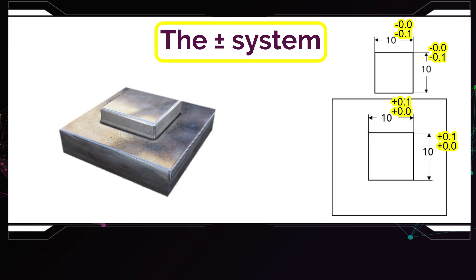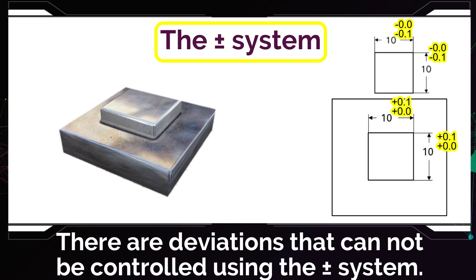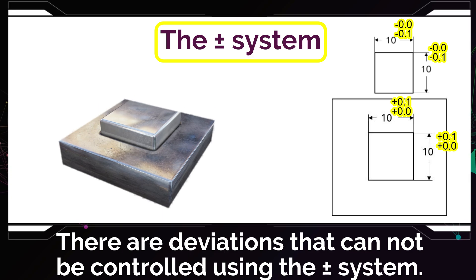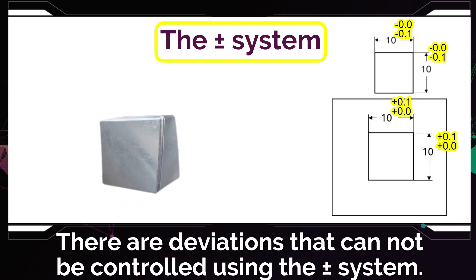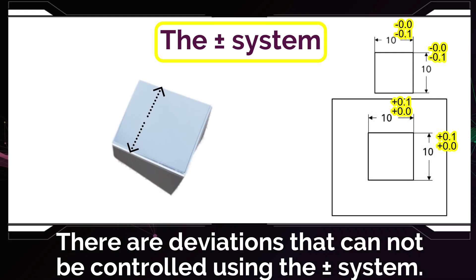This system of tolerancing was the standard system in every industry. Everybody was happy with it, until Mr. Stanley Parker finally stated that this system has a lot of limitations. There are many deviations that cannot be controlled by using the plus-minus system. Going back to the example, if the real parts look like this, you measure and find that it's 10 or less on both edges, so it fits the tolerance.